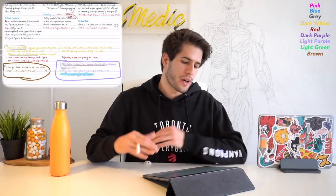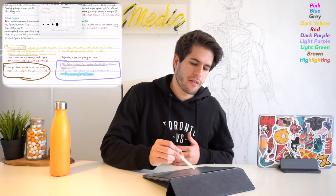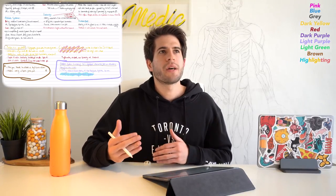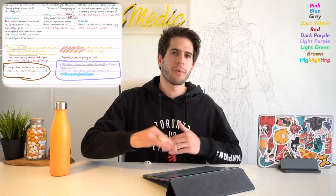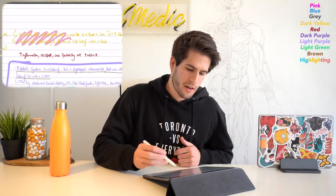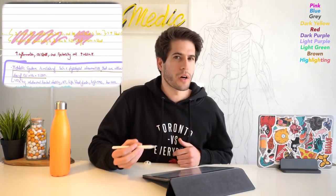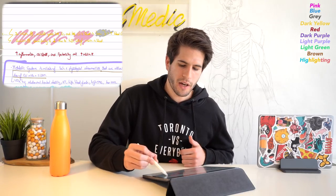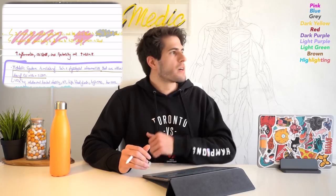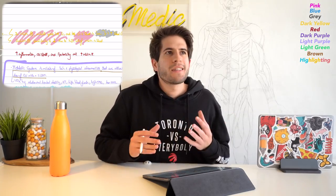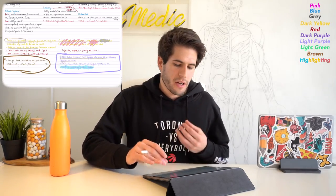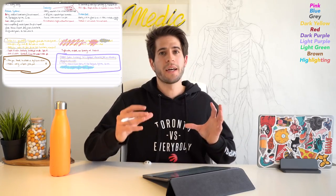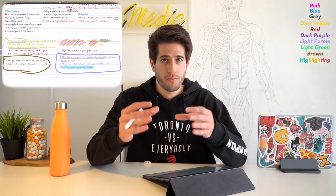Last but not least, I want to cover highlighting. These are all the highlighters — they're again the same colors. Generally, I choose a highlighter color only based on what I think will look best given what color is going to be underneath it. For example, yellow and pink over here doesn't really work well at all — you can barely distinguish the different colors — so I would use something a little bit darker like this gray. Highlighting doesn't really have a strict method; I just choose whatever color I feel like using at the time, whatever I think will stand out most and remind me that this piece of information is really important.